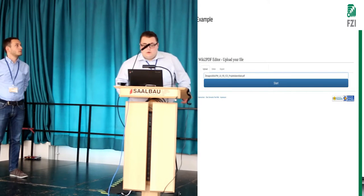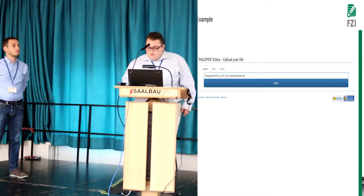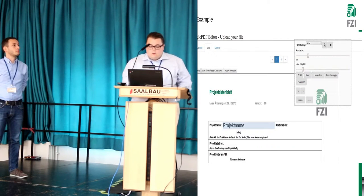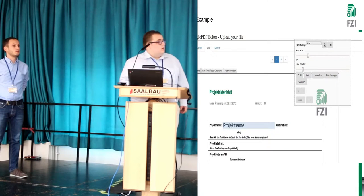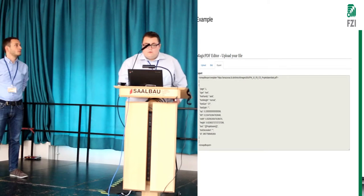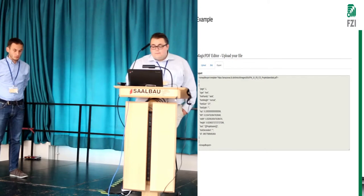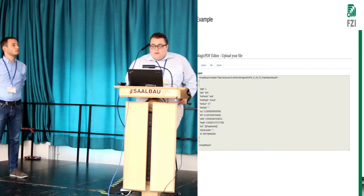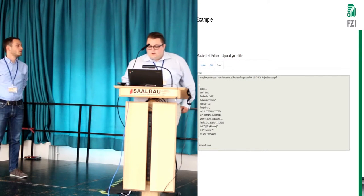Here's an example of our editor. You give it a link to a PDF file, then it opens an editor where you can place variables. Here is the name of a project — you select where the name should be written on the PDF file and give it the variable name. You can set all kinds of visual properties like font size, line height, or font type. Even multi-line fields are no problem; you can set it perfectly so that it fits well.